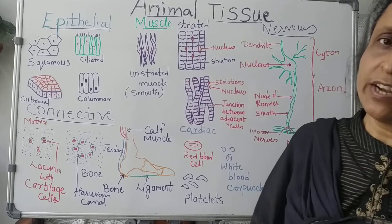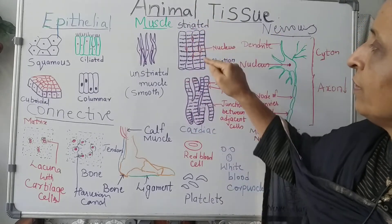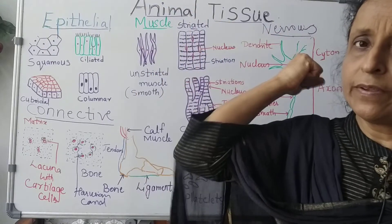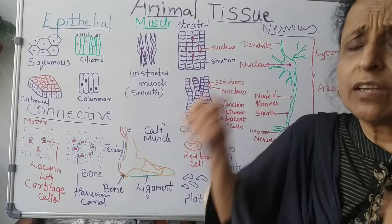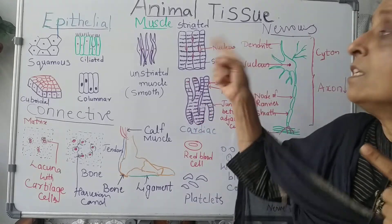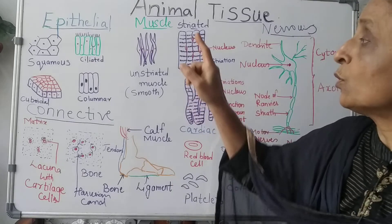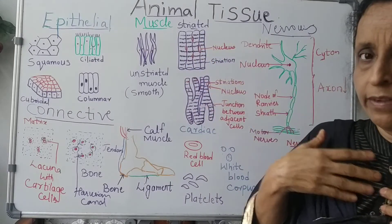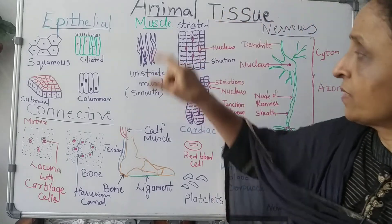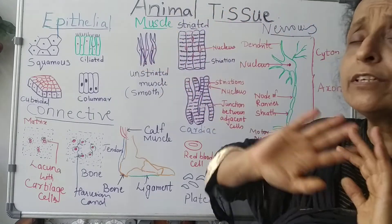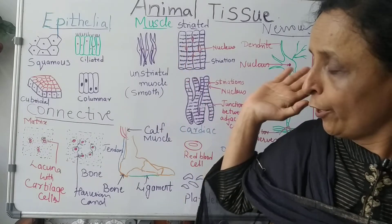Then there are striated muscles — they have striations and a nucleus, and they are present in our arms and legs. Whichever muscles are under our control are striated muscles. These are voluntary muscles. So voluntary muscles are striated muscles, and involuntary muscles are smooth muscles — they are not under our control.